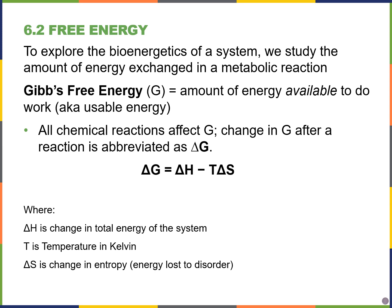In biology, whenever we talk about how much energy is needed to build a larger molecule or how much energy is released when we break one down, we are almost always talking about Gibbs free energy. This is the amount of energy that's available to do work — also known as usable energy — after we account for the energy lost as heat. We can calculate Gibbs free energy using: ΔG = G_final − G_initial.